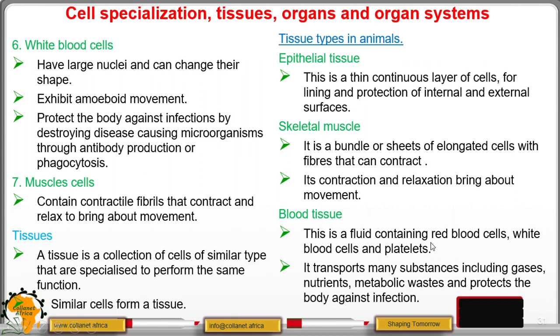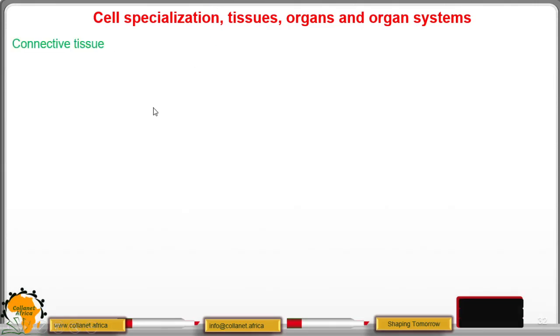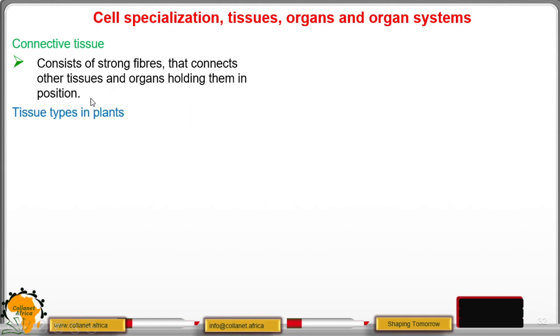The platelets prevent excessive loss of blood when we have a cut or an injury. There is that hard substance formed immediately on a wound, on a fresh wound. It is because of the platelets to help prevent excessive blood loss and even entry of infection into our bodies. Then connective tissue contains strong fibers that connect other tissues and organs so that they are held in position.